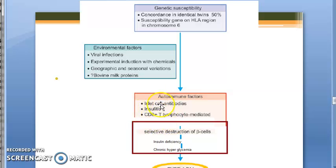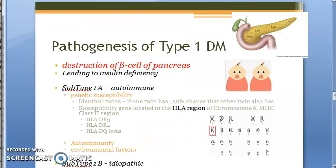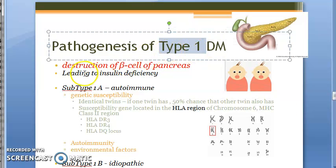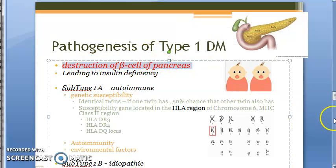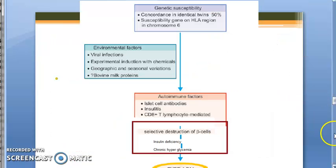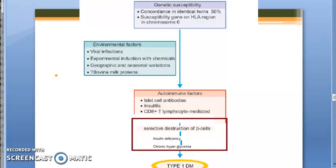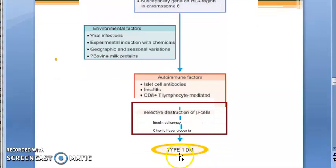The lymphocytic infiltrate leads to CD8 T lymphocyte-mediated destruction of beta cells. So as stated at the beginning, in type 1 diabetes mellitus, it is the T lymphocytes that destroy the beta cells. This leads to insulin deficiency and then chronic hyperglycemia, which finally results in type 1 diabetes mellitus.